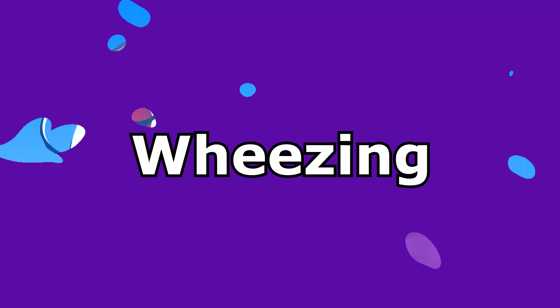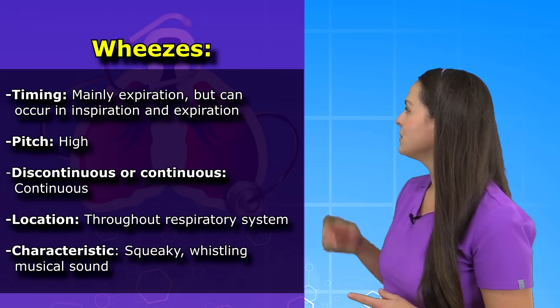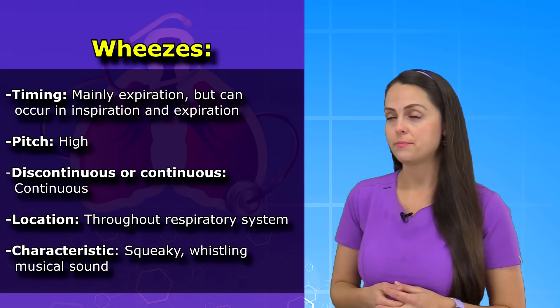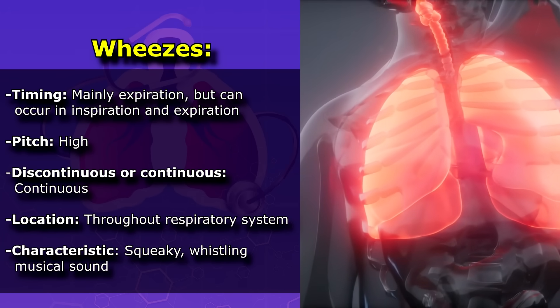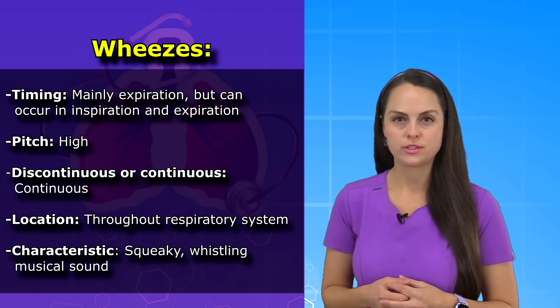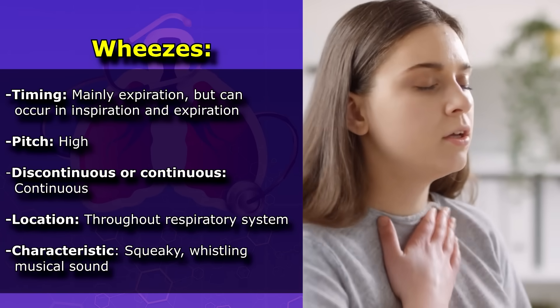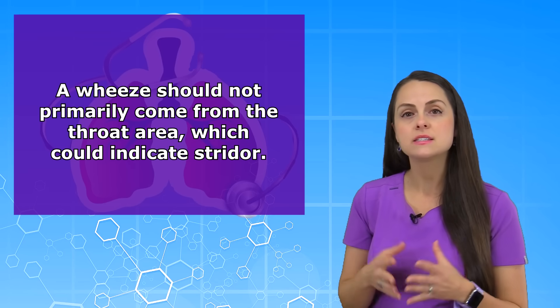Now let's talk about wheeze sounds. How do you know that you're hearing wheezes? You want to pay attention to the timing — with wheezes, you're mainly going to hear them on expiration, where they're going to be the loudest, but you can note them on inspiration and expiration. Their pitch is going to be high. They're going to be continuous and located throughout the respiratory system, and they will have a defining characteristic: a squeaky musical whistling noise. You may even be able to hear them without a stethoscope, especially if your patient is having an active asthma attack. It's important that these sounds are not mainly coming from the throat area, because this may indicate stridor.